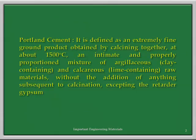Portland cement is defined as an extremely fine ground product obtained by calcining together at about 1500 degree Celsius an intimate and properly proportioned mixture of argillaceous (clay-containing) and calcareous (lime-containing) compounds of calcium, without the addition of anything subsequent to calcination excepting the retarder gypsum.